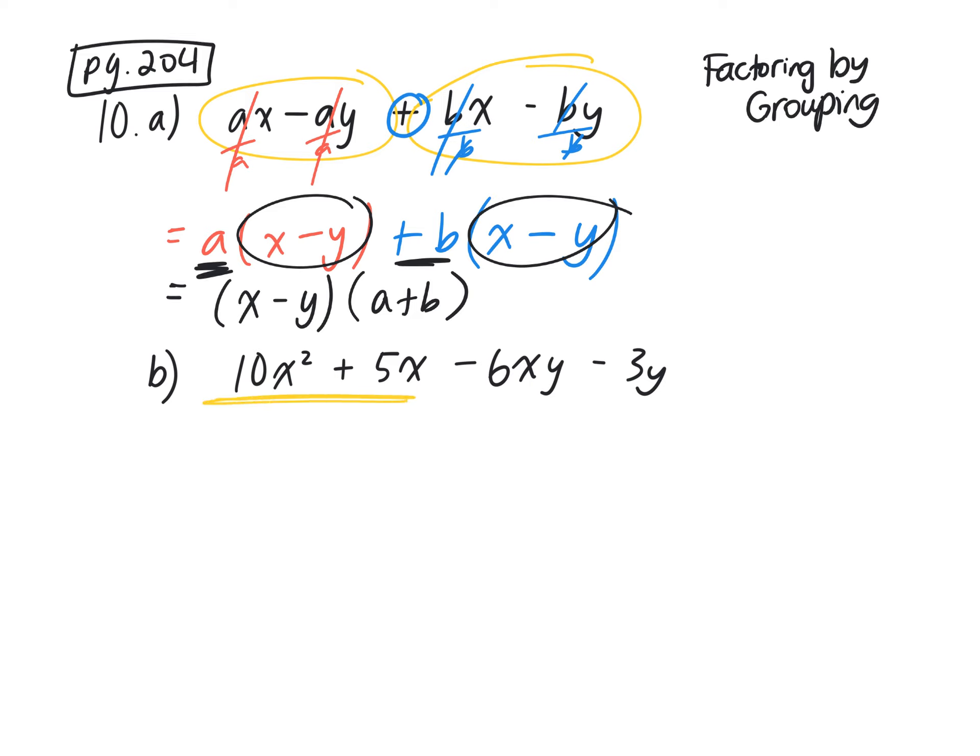For the first two terms here, the common factor is X. And is that it? Is there another common factor? What can these both be divided by as well? Five. So five X, what am I left with? What's 10 X squared divided by five X? And then five X divided by five X is positive one.